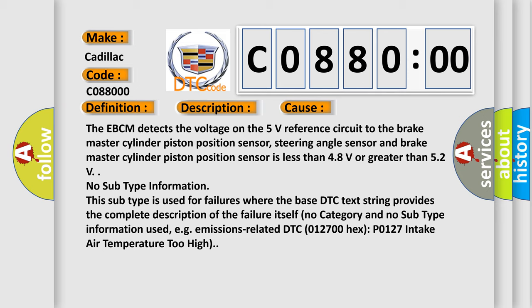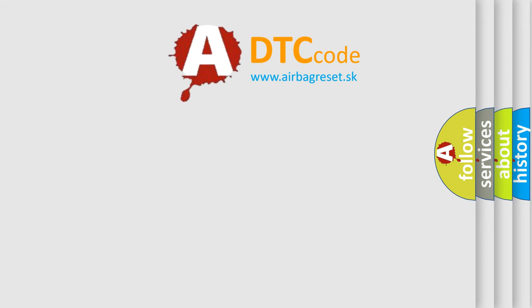For example, emissions-related DTC 012700 hex, P0127, intake air temperature too high. The airbag reset website aims to provide information in 52 languages.